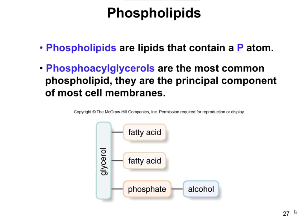The last type of hydrolyzable lipid we're going to talk about here are called phospholipids. Phospholipids have a phosphorus, which is where the 'phospho' part comes in, and they're very similar to the triacylglycerols in that they have that glycerol backbone, except in this case there's only going to be two of the fatty acid components, and then the third component is going to be a phosphate attached to an alcohol. Phosphoacylglycerols are the ones that have these two fatty acids attached to them, and they're also going to be the primary component of cell membranes.